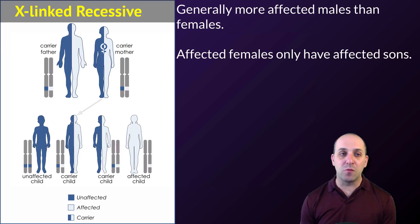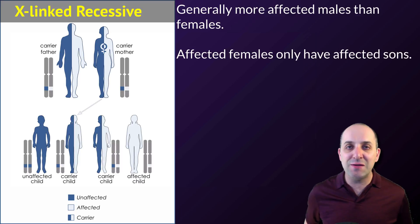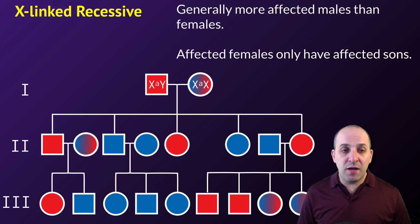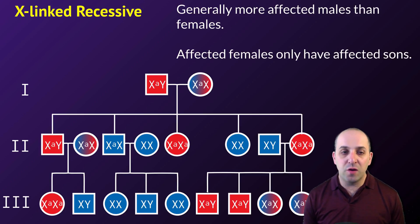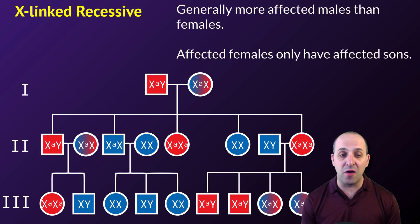The last mode of inheritance we'll look at is X-linked recessive. It looks similar to autosomal recessive, but generally we see more affected males than females. Affected females who have both copies of the X-linked recessive allele can only produce affected sons, since sons get their X chromosome from their mom. It may sometimes be difficult to distinguish X-linked recessive from autosomal recessive on a pedigree, but there should be clear evidence pointing one way. It's important to understand that just because a trait is X-linked recessive doesn't mean it will only show up in males — it just means it's more likely to, since males only have one X chromosome.